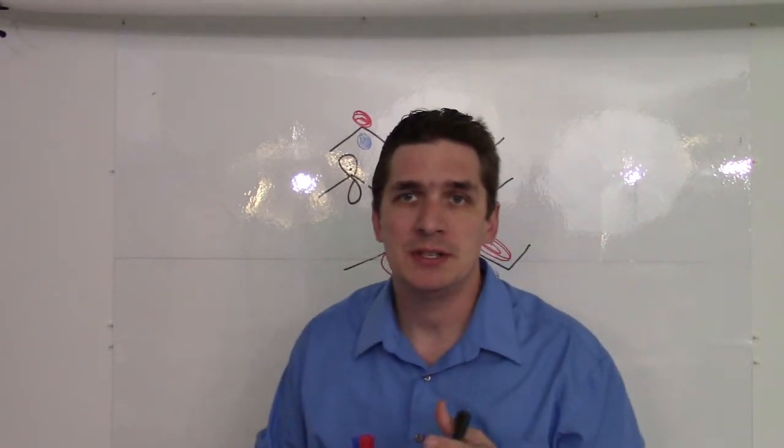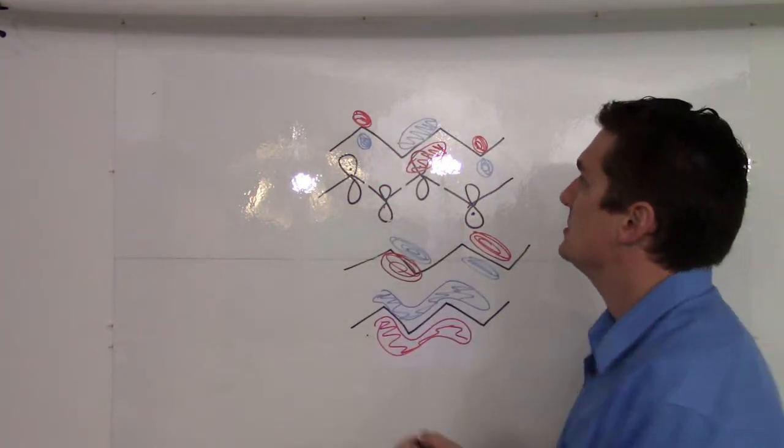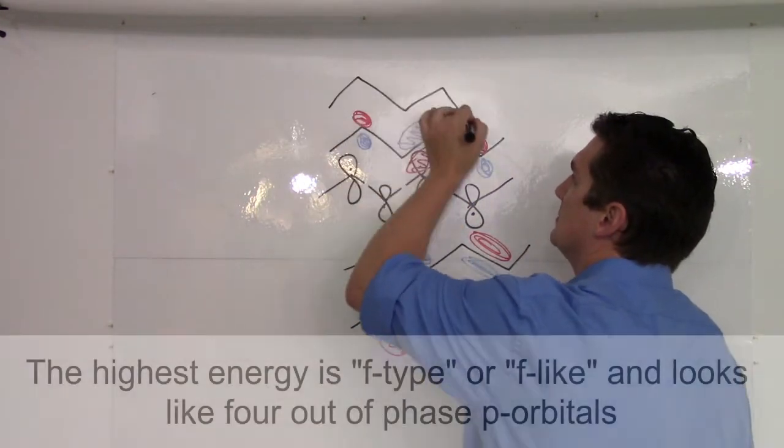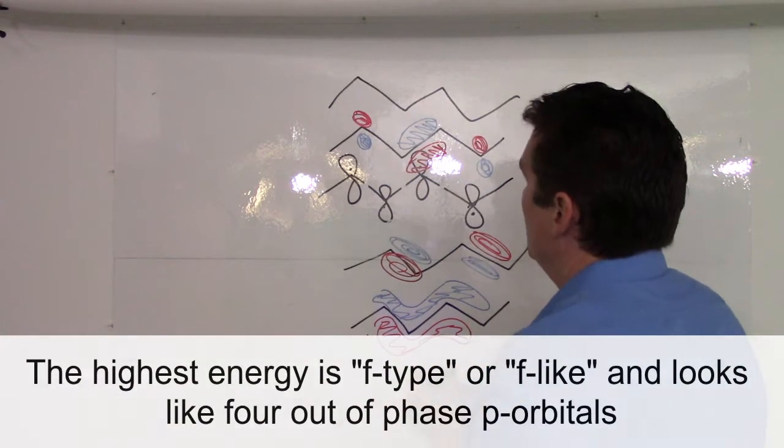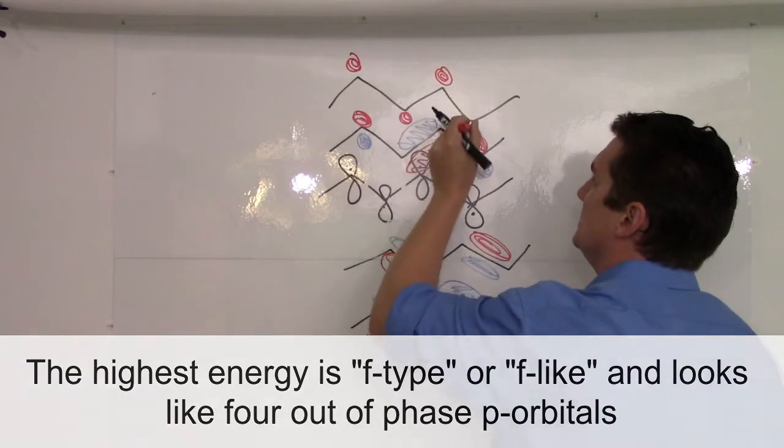Now, our highest energy one is going to be the one that's going to look f-type. And in this f-type, all three of these are out of phase. So, if we draw it, we've got up, down, up, down.